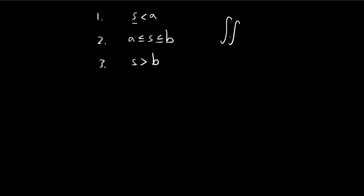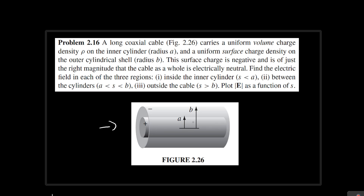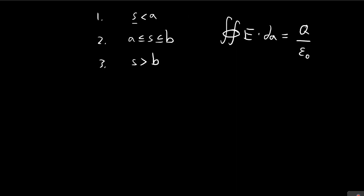We're going to use Gauss's law, and we'll use the argument that because the charge density is constant, the electric field is going to be pointing in the radial direction. So if we choose a cylinder as our Gaussian surface, we can simplify the surface integral into the absolute value of the electric field times the surface area, equal to the charge enclosed divided by epsilon.